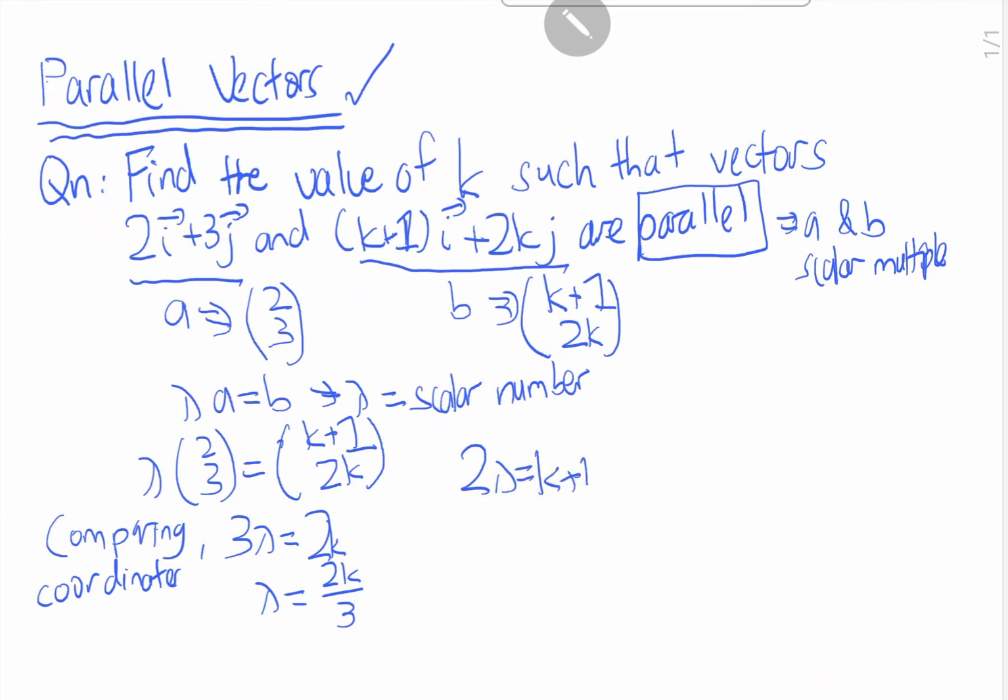So let's sub this one into the top part here. So 2 times 2k over 3 equals k plus 1. So let's times this one by 3, and the right side also times 3. So it's 4k equals 3k plus 3.